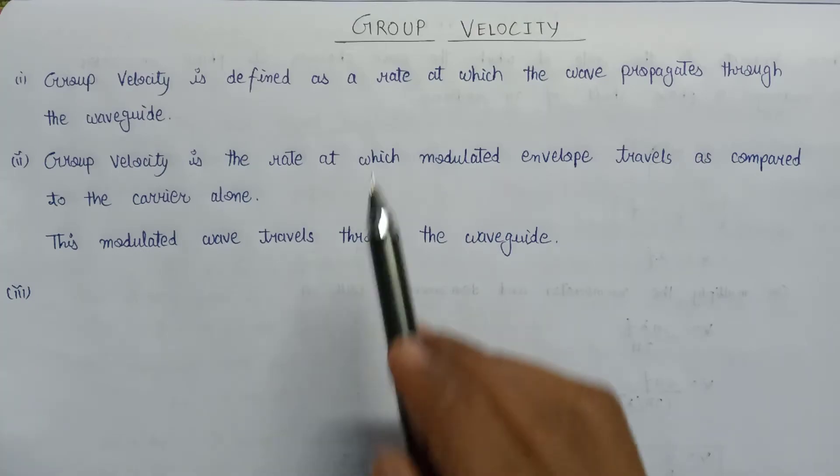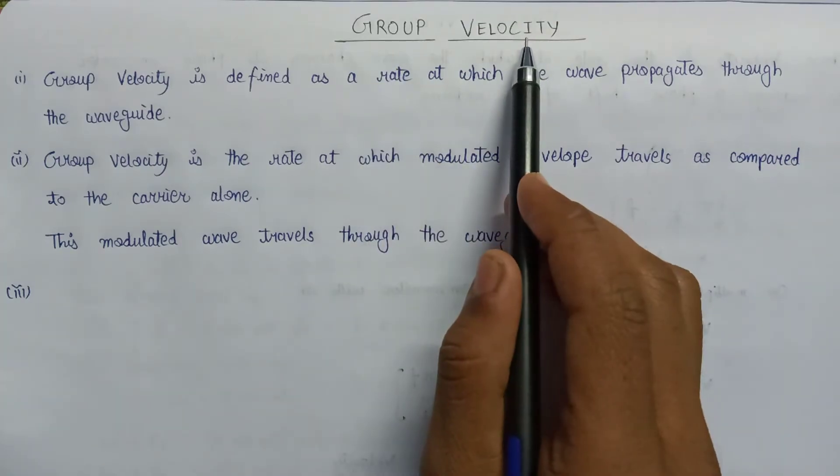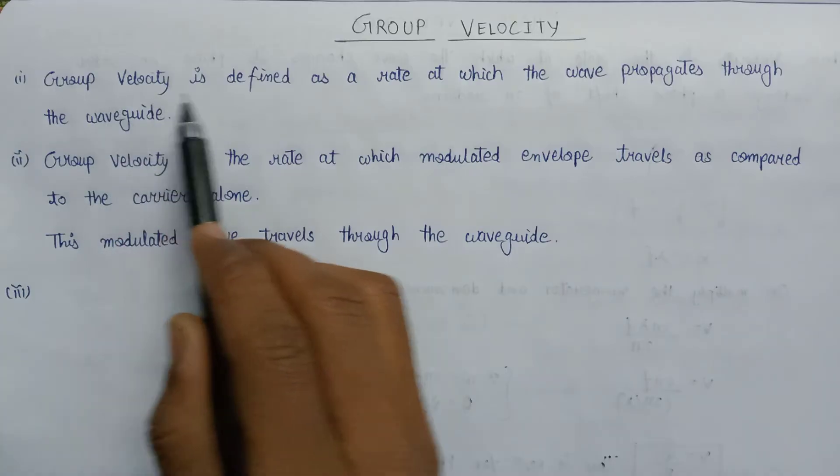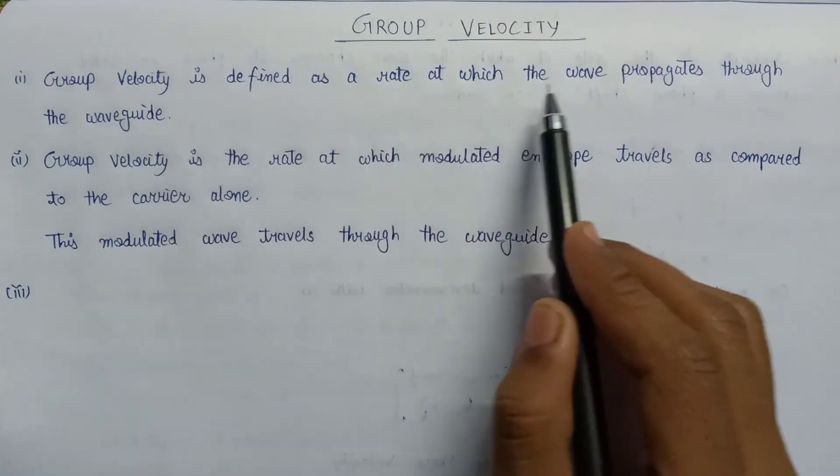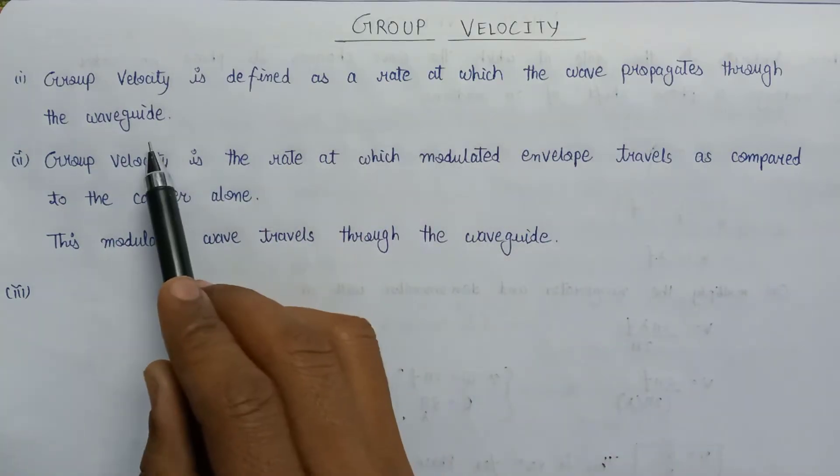Welcome all. In this lecture, we are going to learn about group velocity. Group velocity is defined as the rate at which the wave propagates through the waveguide.